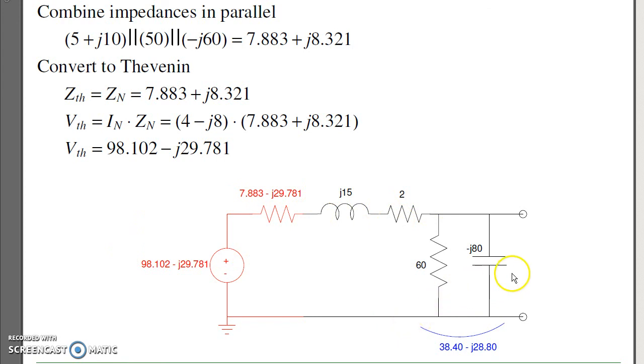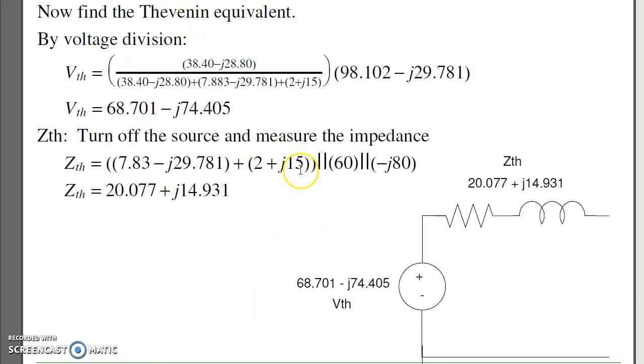The Thevenin impedance are minus j80 and parallel 60 and parallel with all these. Putting it all together, I get a complex number. This is my V Thevenin, a complex voltage. And there's your Z Thevenin, complex impedance. So again, everything we did at DC still works, except now we're using complex numbers.